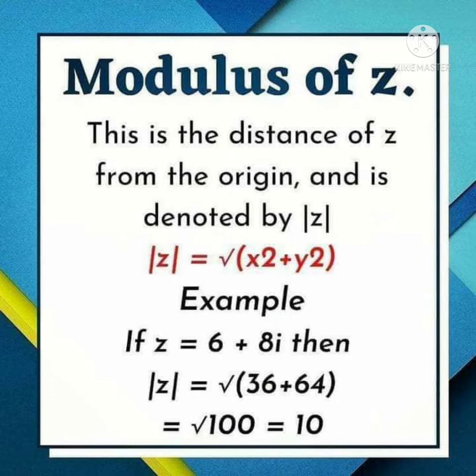Modulus of Z. This is very important. In examinations they will ask you for finding the modulus of Z. This is the distance of Z from the origin, and is denoted by |z|. Let us see how to find the modulus of Z.